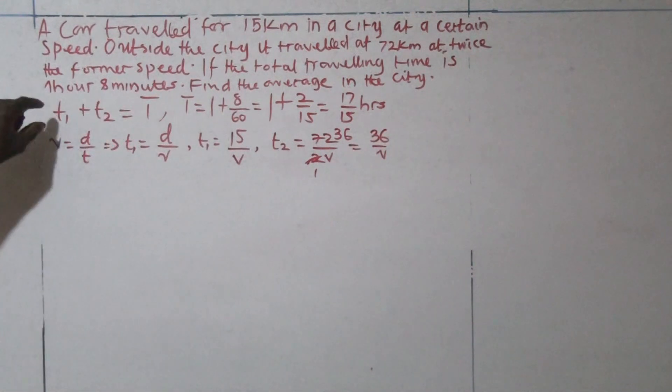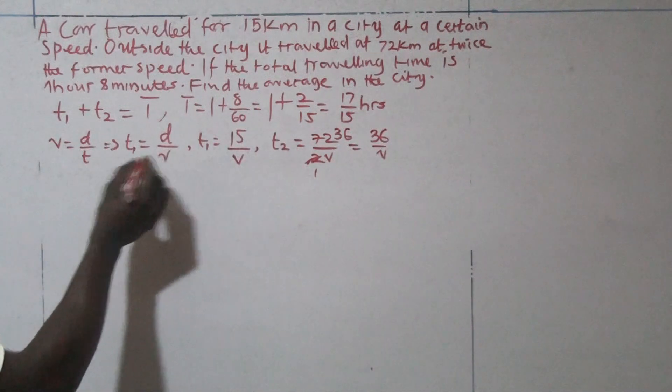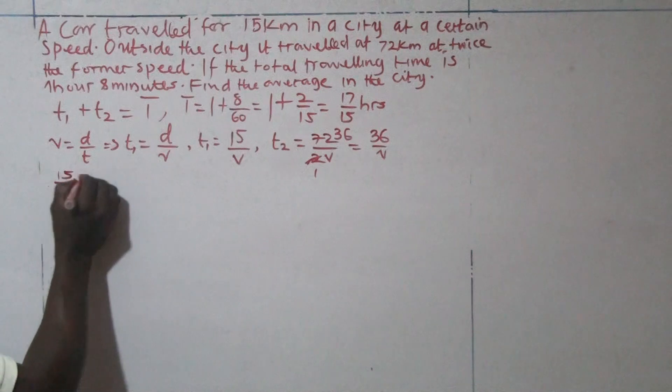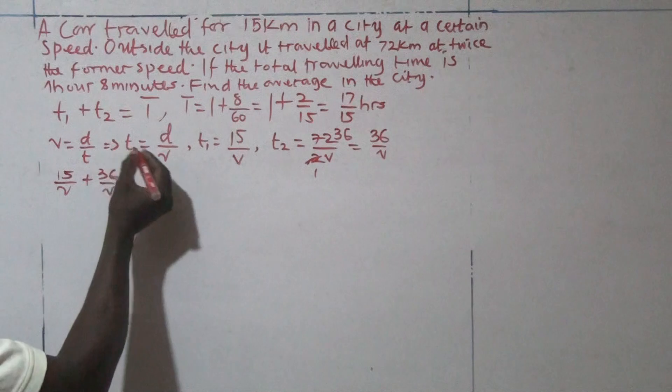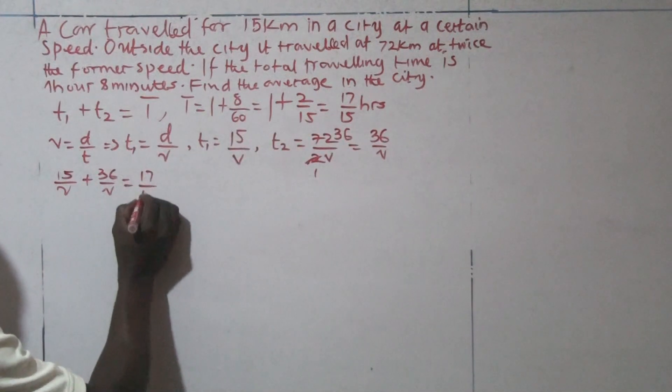So we will insert this in the equation that relates with the entire time. Here, T1 is 15 over V plus T2 is 36 over V is equal to the entire time, the total time, 17 over 15.